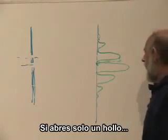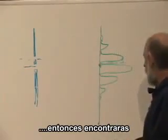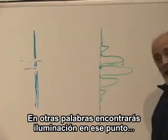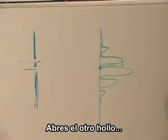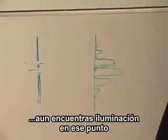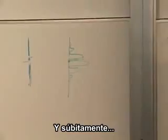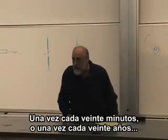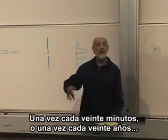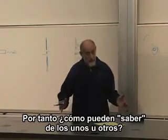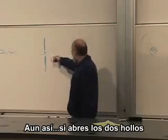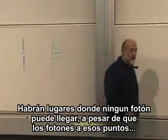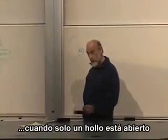This is odd. If you opened only one hole, then you would find a probability distribution which wasn't zero — in other words, you would find illumination at that point. You open the other hole, you still find illumination at that point. You open both holes, and all of a sudden no photon gets to that point, even though they're coming through once every 20 minutes or once every 20 years — and therefore, how can they know about each other? Nevertheless, if you open both holes, there will be places where no photons can get to, despite the fact that photons arrived at those points when only one hole was open.